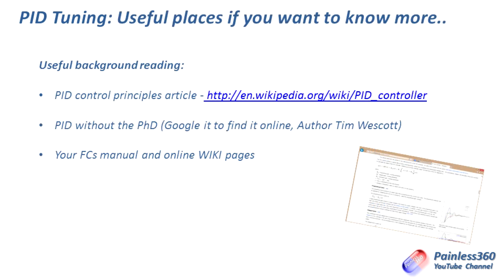There are a couple of places you can go to find more information. First, there are some really good articles on Wikipedia that go through PID control loop principles. The second one I'd really recommend: if you Google 'PID without a PhD' by Tim Wescott, it goes into quite a bit of detail but tries to explain tricky parts using physical models — plumbing, motors, servos — and that really helped me relate control theory to real-life systems. The last place to look is your flight controller manual, since PID loops are different in every controller and the numbers and increments needed will vary.